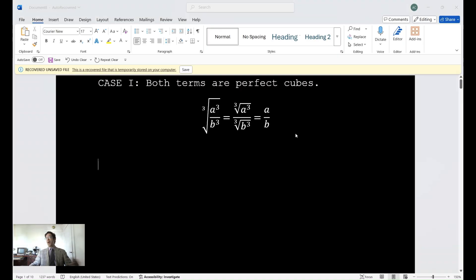How to extract the cube root without a calculator. The first case: when both terms are perfect cubes. If both the numerator and denominator are perfect cubes, you could take the cube root of each. That's pretty straightforward. You're left with A over B.